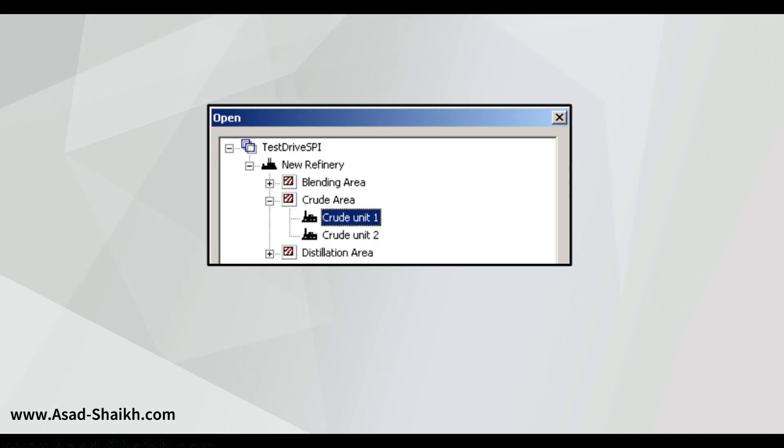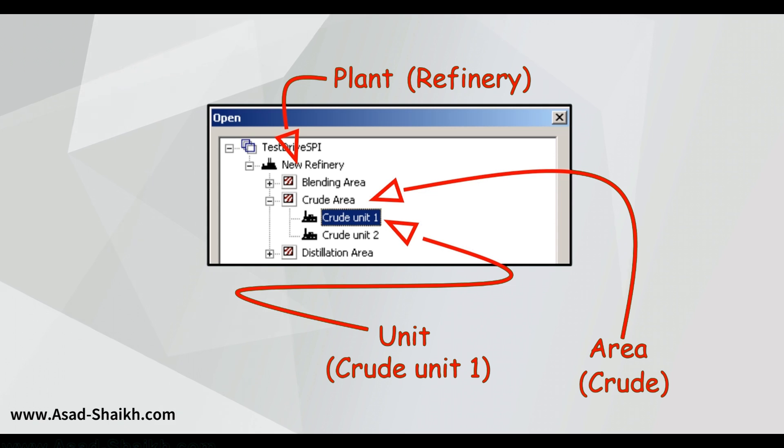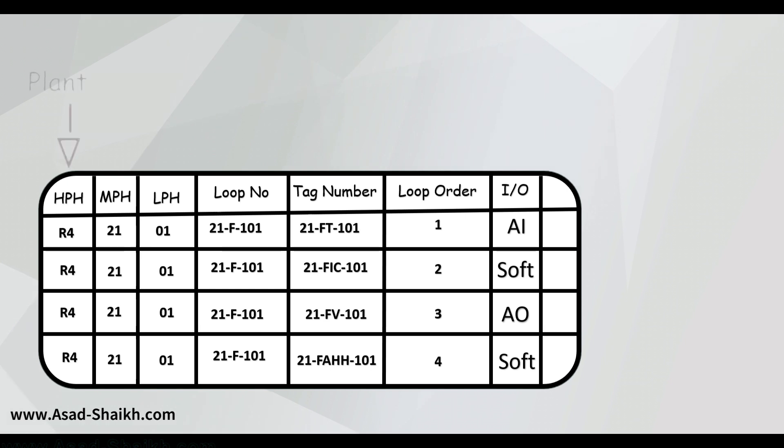If you would see in SPI this is how it would look like. So if you have a new refinery let's call it R4 for example. So you have a refinery or a plant for example at the top. Then you have the area like blending area, crude area, distillation area and then you have the unit. So a tag is created inside a particular unit. This is an example. So if you see here the HPH stands for highest plant hierarchy, MPH stands for medium plant hierarchy and LPH stands for lowest plant hierarchy. This is how it is generally referenced in SPI. So you have the plant area and the unit. So in this way a particular tag is identified with respect to PAU philosophy.